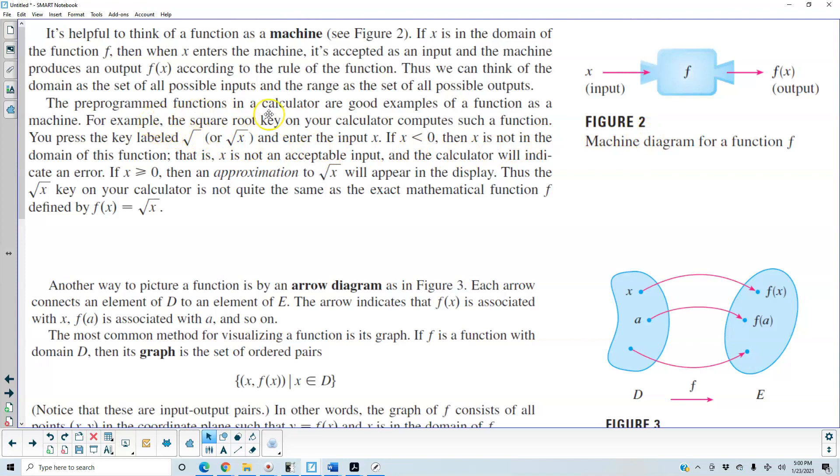The pre-programmed functions in a calculator are good examples of a function as a machine. For example the square root key on your calculator computes such a function. You press the key labeled the square root sign or the square root of x and enter the input x. If x is less than 0 then x is not in a domain of this function. That is x is not acceptable input and the calculator will indicate an error. If x is greater than or equal to 0 then an approximation to the square root of x will appear in the display. Thus the square root of x key on your calculator is not quite the same as the exact mathematical function f defined by f of x which is equal to the square root of x.